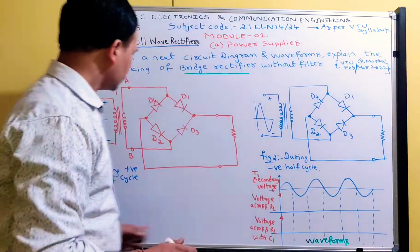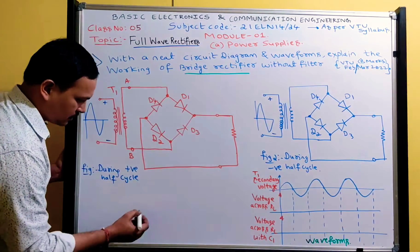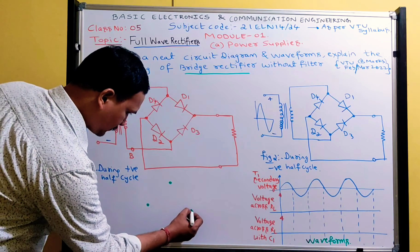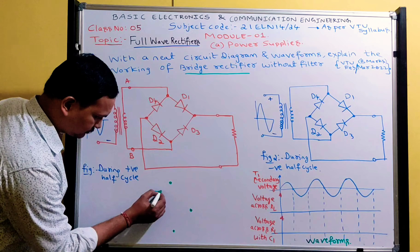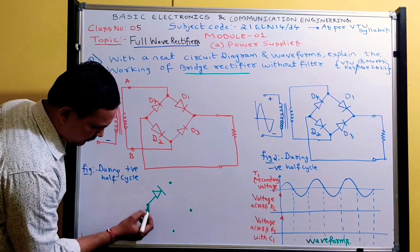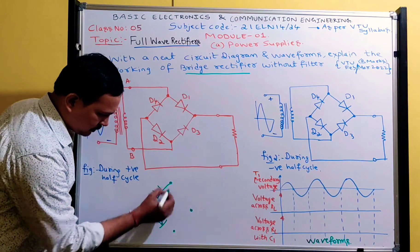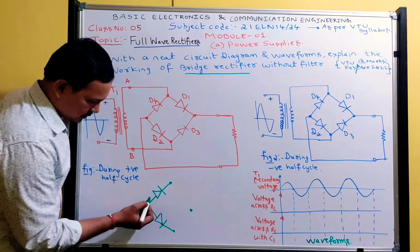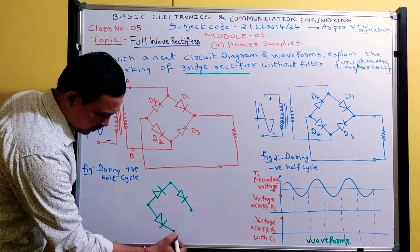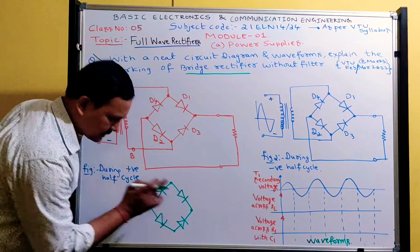To draw the bridge rectifier circuit, make four dots in a rhombus shape and place a diode at each side. All anodes are connected to one end and both cathodes connect to another end. From one point to the opposite point, connect diodes in series. The anode and cathode directions must be consistent as you go around the bridge.